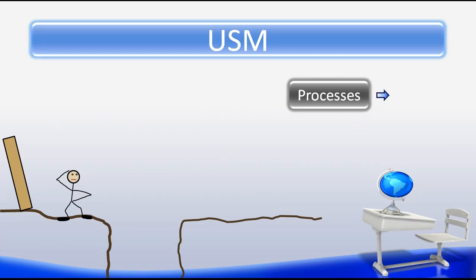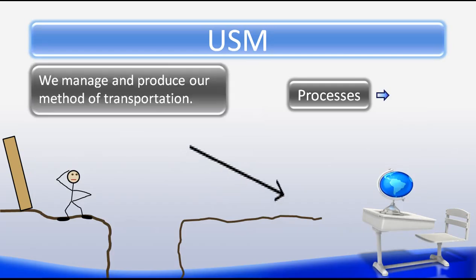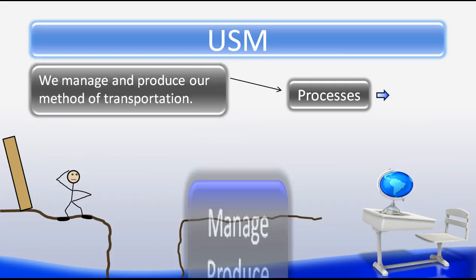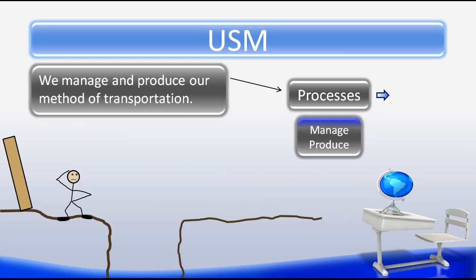During the processes stage, we manage and produce the method of transportation technology. Management includes the organization of inputs to ensure maximum benefit and efficiency. This also includes decision-making on product testing data. Some of the questions asked are: does it work or does it not work, and what do we need to do to make it work if it didn't? The production part of our processes creates a lot of feedback for answering questions such as how well is the production of the transportation technology operating, and can improvements be made to maximize efficiency?